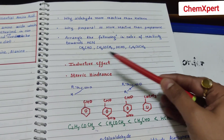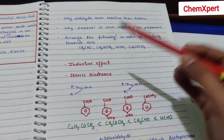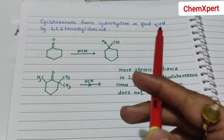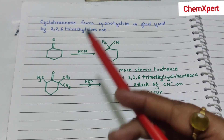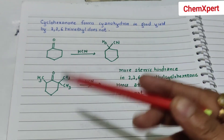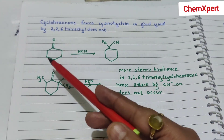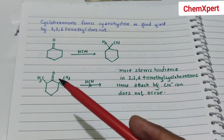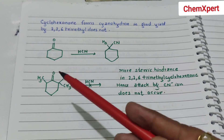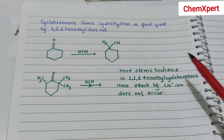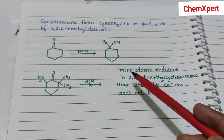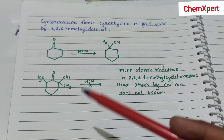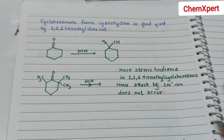Greater the inductive effect, lesser will be the reactivity; greater the steric hindrance, lesser will be the reactivity. In aldehyde, less inductive effect and less steric hindrance make it more reactive. Cyclohexanone forms cyanohydrin in good yield, but 2,2-trimethylcyclohexanone does not, because CN⁻ must attack the carbonyl. In 2,2-trimethylcyclohexanone the carbonyl is very much sterically hindered, hence the attack of CN⁻ ion does not occur.